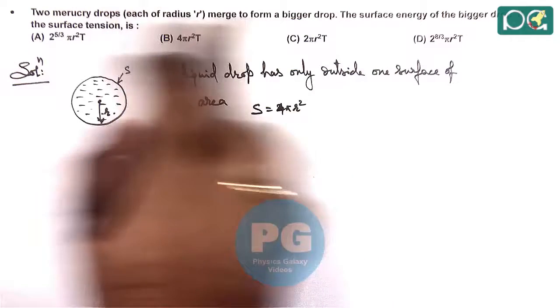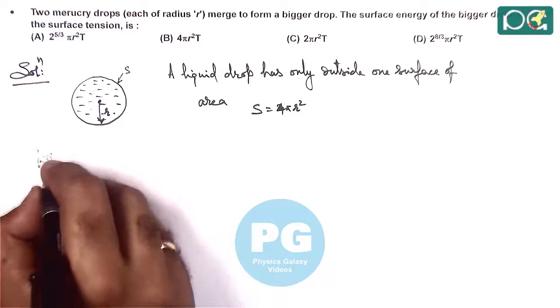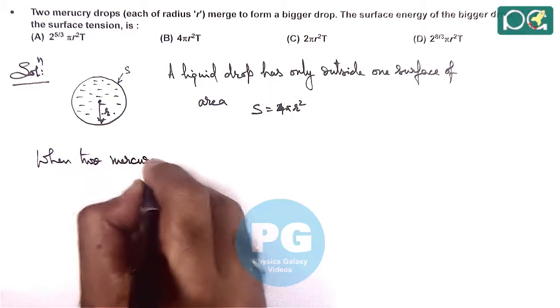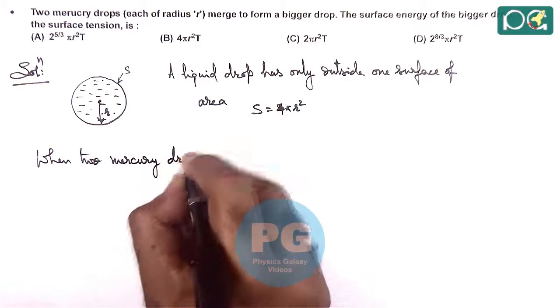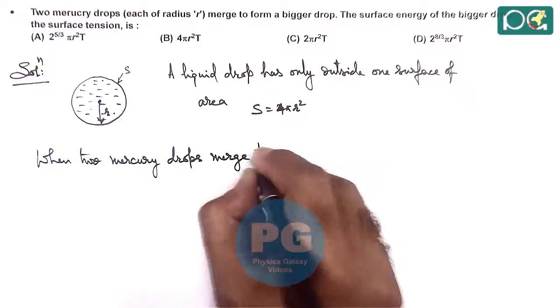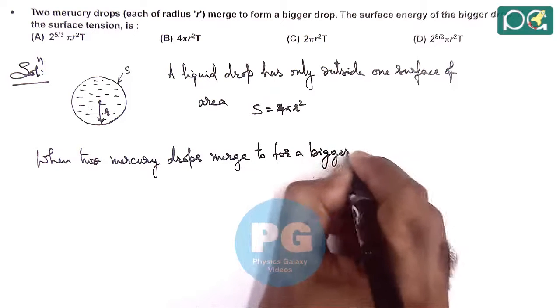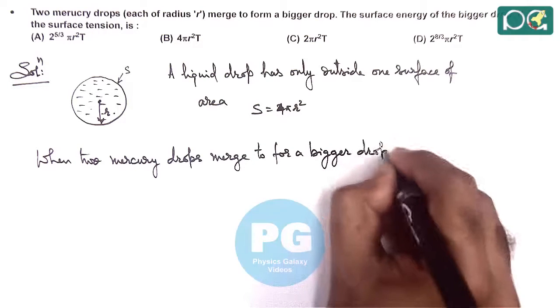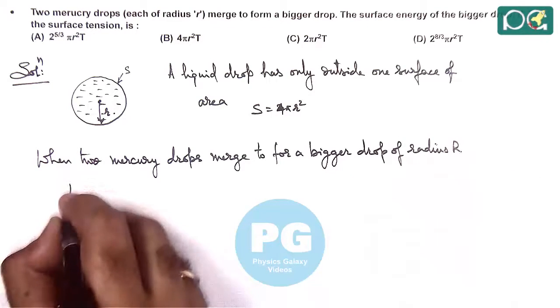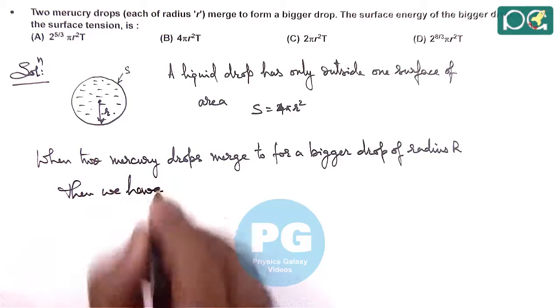Now it is saying two mercury drops merge to form a bigger drop of radius R. Then we have, as the volume is same,